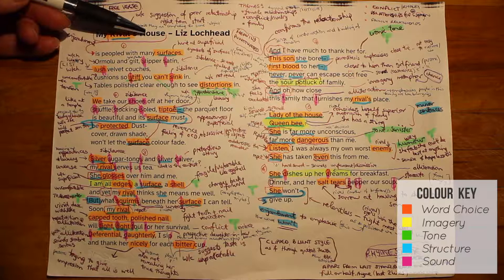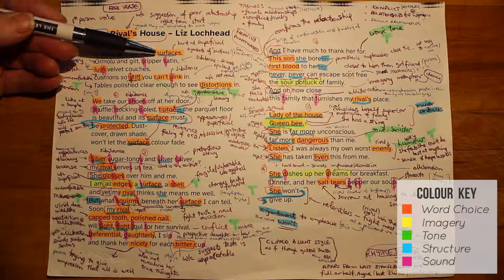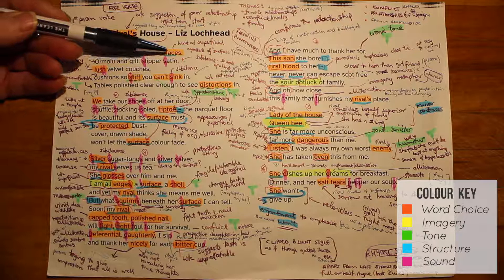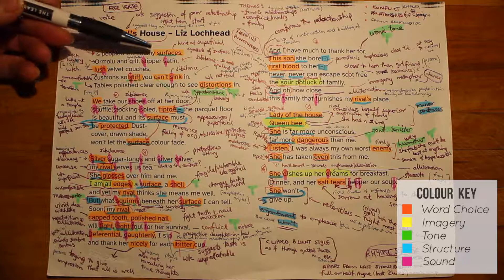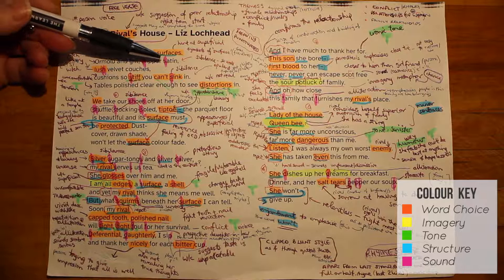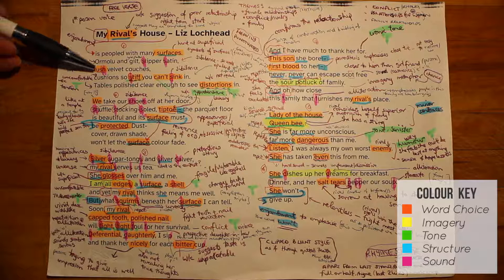The word choice of surfaces immediately brings to the reader's attention the idea of superficiality — a fake friendliness, perhaps, or suggesting the house is trying to be something it actually isn't. References to ormolu and gilt both suggest that although something appears to be gold in colour, it isn't actually gold — again, the idea of the surface not necessarily being the real thing. The use of sibilance with slippers, satin, and lush helps convey the idea of luxury and luxuriousness of the fittings in the house. Velvet also is a luxury material.